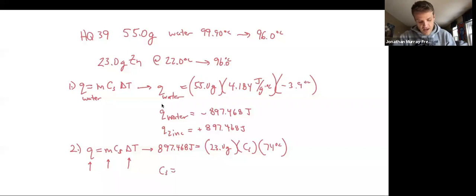So the specific heat of zinc—divide that by 23 times 74. And this is three significant figures.